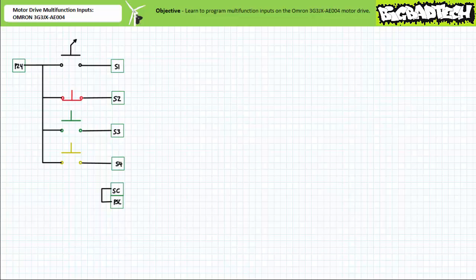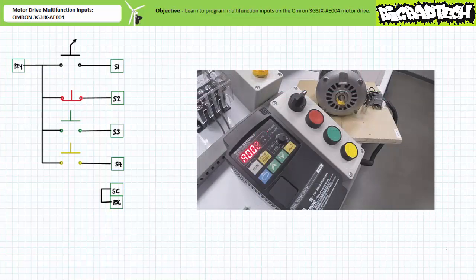Now we need to program this drive to recognize these four inputs. Warning — what I'm about to do now is dangerously wrong. Namely, I'm about to leap before I look. Let what is about to happen be a lesson to those that act before they think. Navigate to extended function parameter A002, run command selection. Select mode.